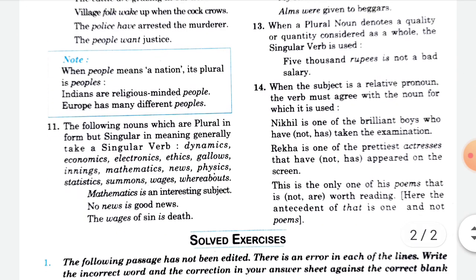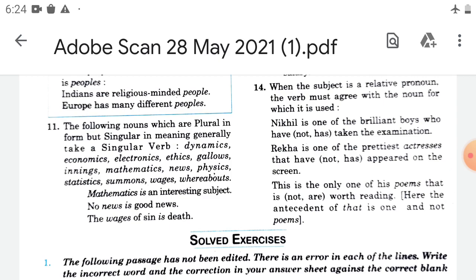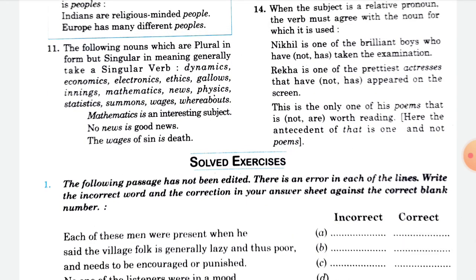When the subject is a relative pronoun, the verb must agree with the noun for which it is used. For example: 'Nickel is one of the brilliant boys who have taken the examination', 'Rekha is one of the prettiest actresses that have appeared on the screen', 'this is the only one of his poems that is not worth reading'. In this way we have covered subject-verb agreement. Thank you.